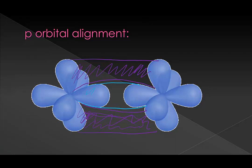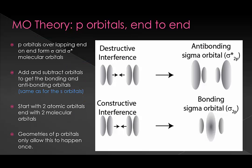Our last set of p orbitals would also overlap side on side, and those would overlap coming into and out of the screen. When they overlap end on end, they form sigma and sigma star orbitals just like when we overlapped the s orbitals. They look a little different though because they're not just spheres — they're these two lobes. And when these two lobes overlap, they can overlap two different ways: constructively or destructively, just like the s orbitals, forming two different shapes depending on how they interact.